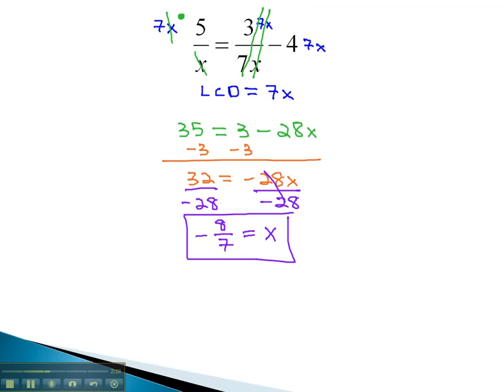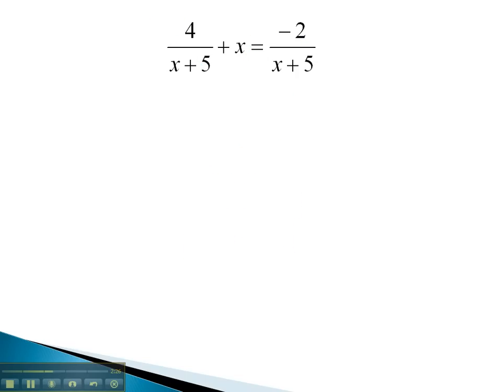Let's try one more example where we have to clear the denominator by multiplying by the least common denominator. In this problem, our denominators are a binomial, x plus 5. This means my least common denominator is going to be that binomial, x plus 5. What we'll do with this is we will multiply each term by x plus 5. Notice this includes the x, which was not a fraction.